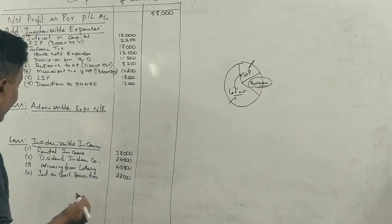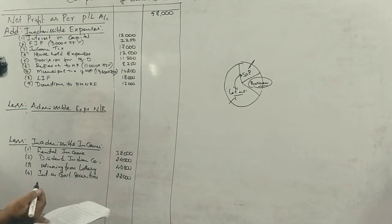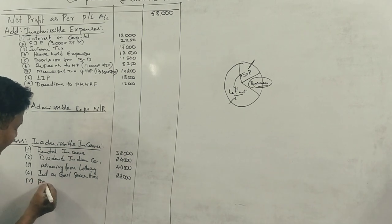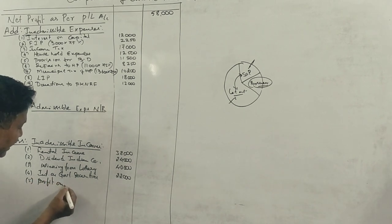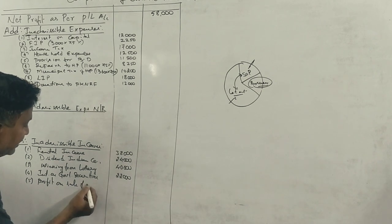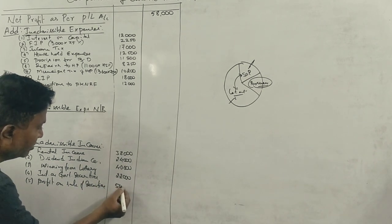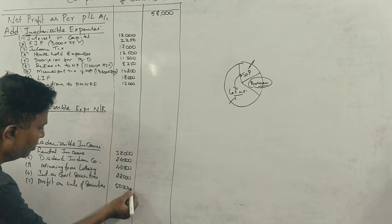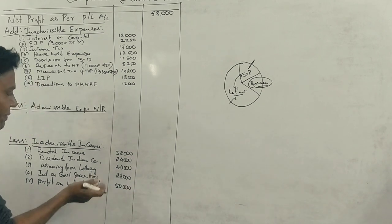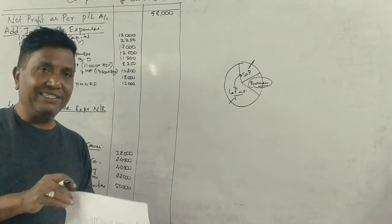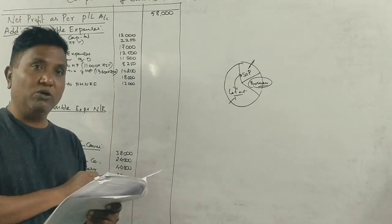Profit on sale of securities — long term — is Rs. 50,000. This is actually a capital gain, not income from business. Therefore, it is not admissible under the head 'income from business.'